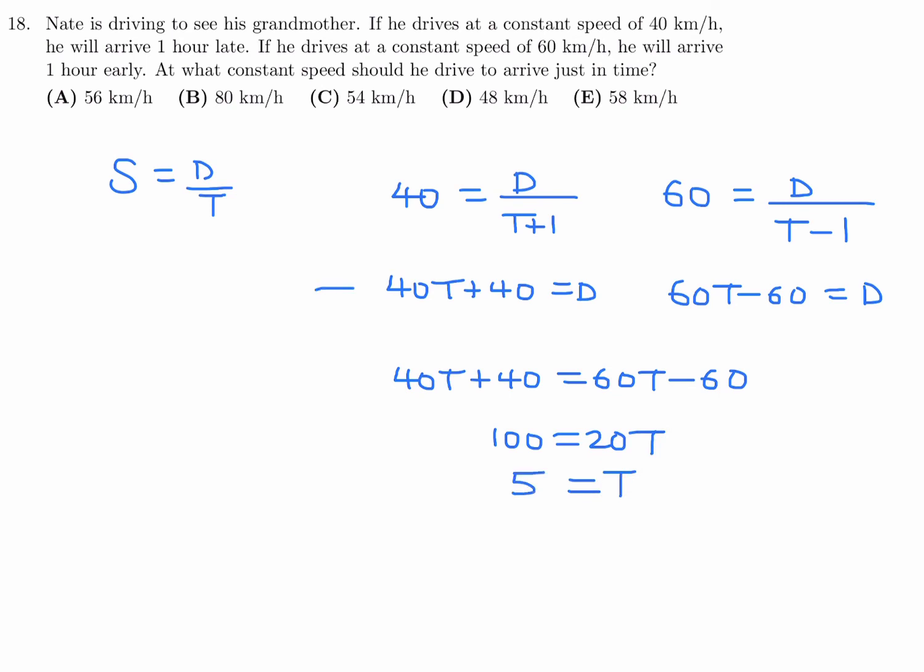Now I can sub that back into either one of these to get D. If T is 5, that's going to be 40 times 5, which is 200 plus 40, so 240. So S is 240 over 5 and that is 48. Number 18, that is D.